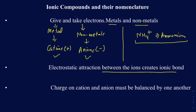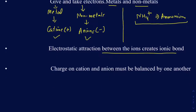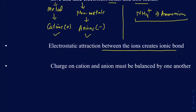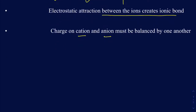Once you actually make the ionic compound, you must make sure your charges are balanced. The charge of the cation and the anion must balance one another. Let's take some examples. Assume I have sodium with a charge of 1+, and chlorine with a charge of 1−. Once it gets 1−, it's going to be called chloride.